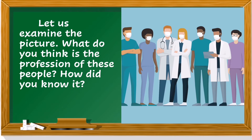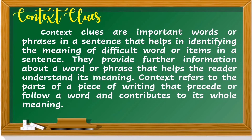Let us examine the picture. What do you think is the profession of these people? How did you know it? Maybe you know it because they are wearing their scrub suits, their stethoscope as doctor, they are wearing masks, and maybe because of their uniform. Context clues are important words or phrases in a sentence that helps in identifying the meaning of a difficult word or items in a sentence. They provide further information about a word or phrase that helps the reader understand its meaning. Context refers to the parts of a piece of writing that precede or follow a word and contributes to its whole meaning.